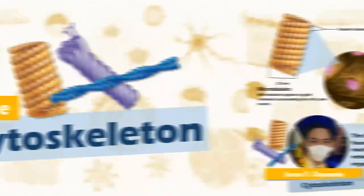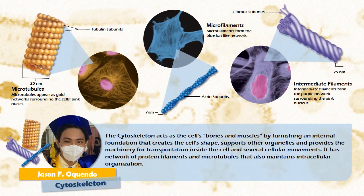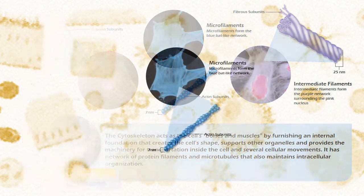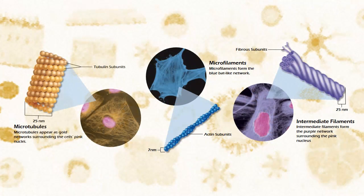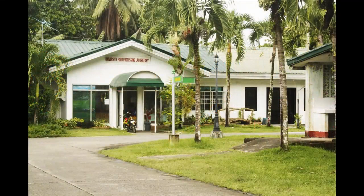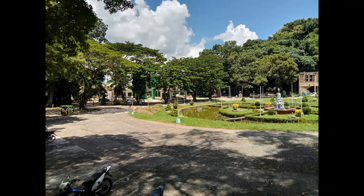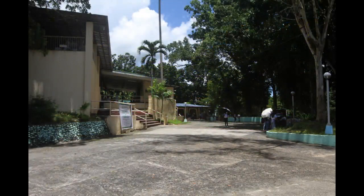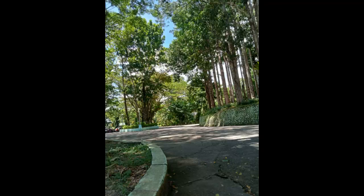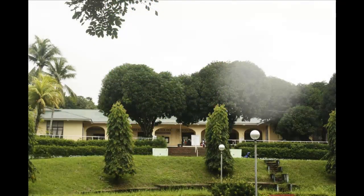The Cytoskeleton. The cytoskeleton acts as the cell's bones and muscles, functioning as an internal foundation that creates the cell's shape, supports other organelles, and provides the machinery for transportation inside the cell and several cellular movements. It is composed of microfilaments, intermediate filaments, and microtubules that maintain intracellular organization. We can compare it to our campus pavements — it directs movement along paths to destinations inside the campus. The microfilaments and tubules can also be compared to land structures, like the trees surrounding our campus, whose roots hold the soil and create a compact foundation that enables the establishment to stand.